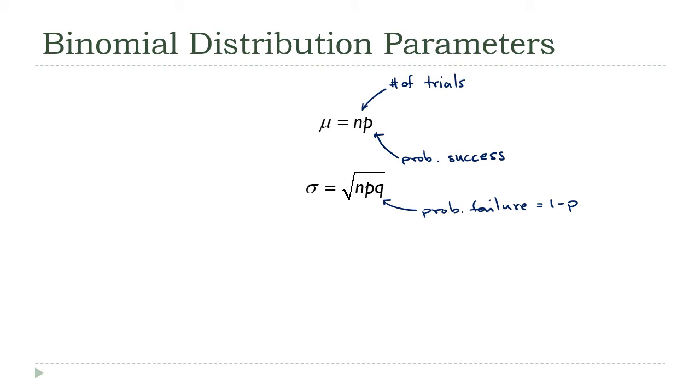Well, N is the number of trials and I know we always call P the probability of success, but remember probabilities and proportions are really kind of the same thing. So that P is not just a probability of success, it's the proportion of successes. We take the number of trials times the proportion of the trials that are successes.